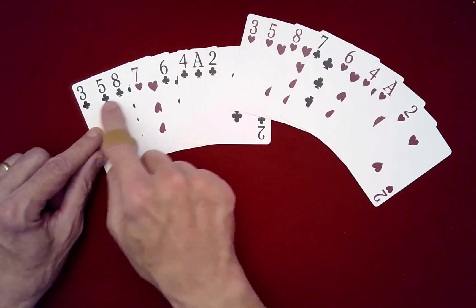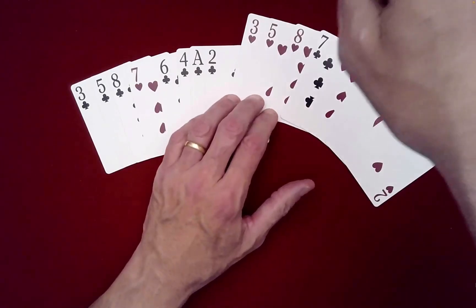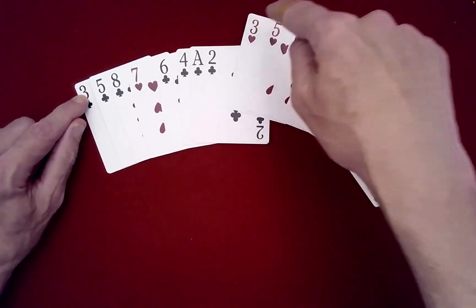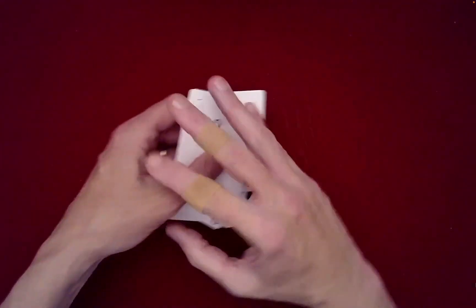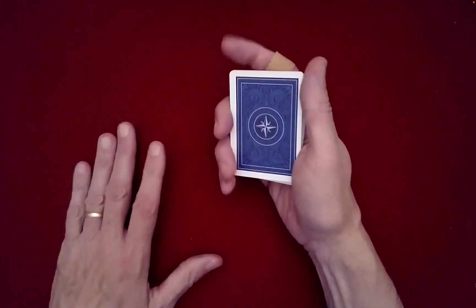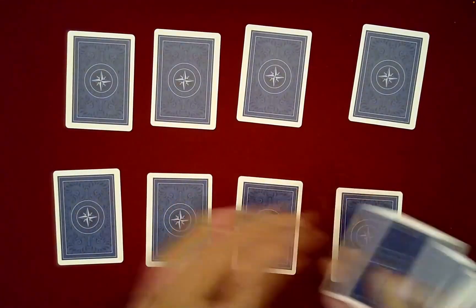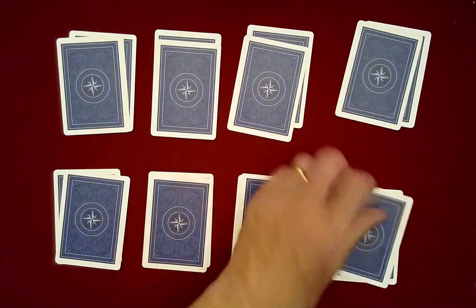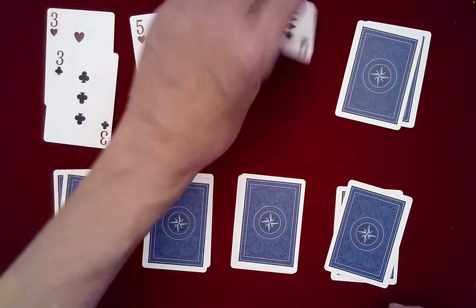So this is just going to separate the cards into identical value cards. So one, two, three, four, five, six, seven, eight, one, two, three, four, five, six, seven, eight. And then you can reveal that you've reunited the card values.